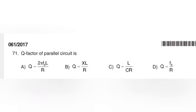Q factor of a parallel circuit. Option A: Q = 2πF₀L/R. Option B: Q = XL/R. Option C: Q = L/CR. Option D: Q = F₀/R. What is Q factor? Q factor is a measure of the quality of a resonant circuit.